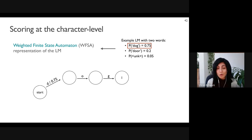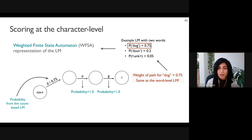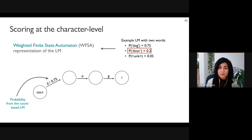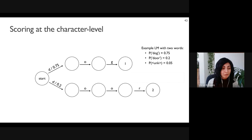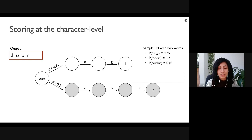To construct the WFSA, consider a simple language model with two words: 'dog' and 'door.' The WFSA has a start state from which we add transitions to consume each character of the word in sequence. The score to enter that path of states is the probability from the count-based language model, and subsequent transitions are assigned a probability of one. The total cost of the path to process the word 'dog' at the character level is the same as the probability of 'dog' from the word-level language model — converting word probabilities to a character-level representation.